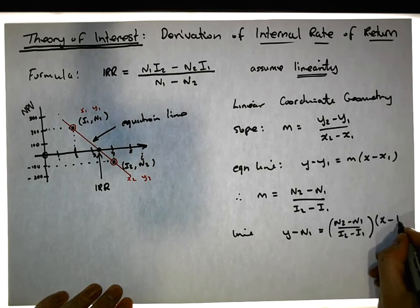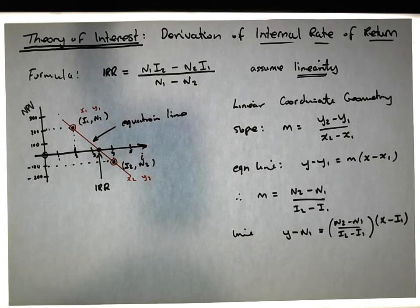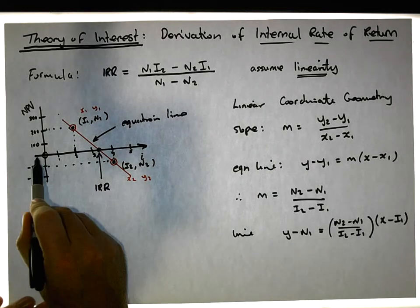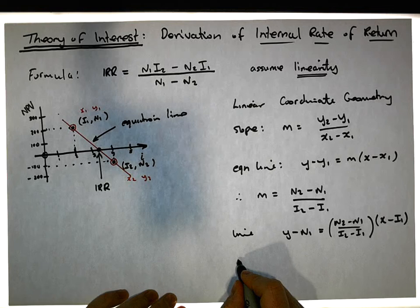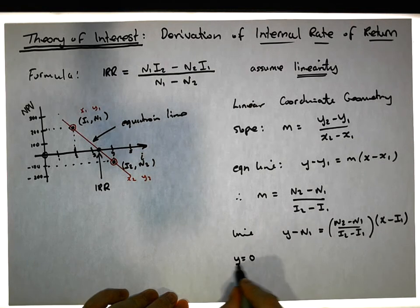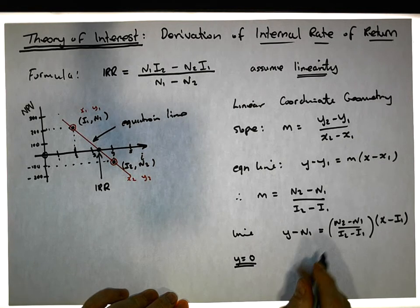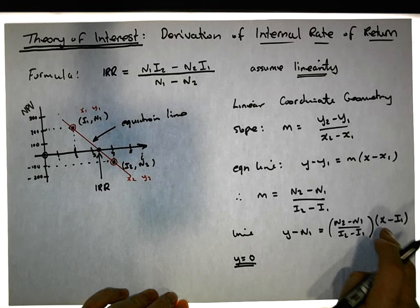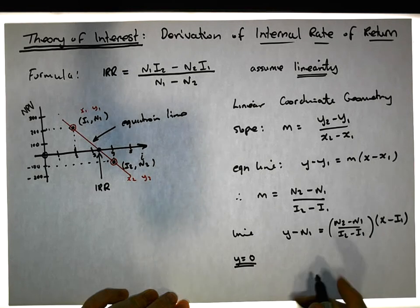Let's keep in mind that the solution we're looking for is when y is equal to zero. So when y equals zero, we end up with the relationship between the x's. The x here is the interest rate that we're looking for.